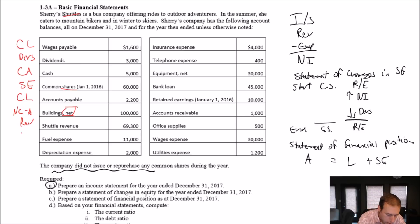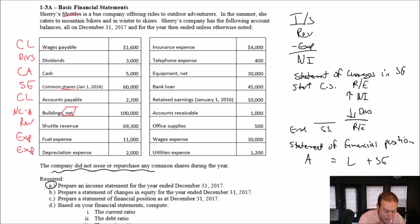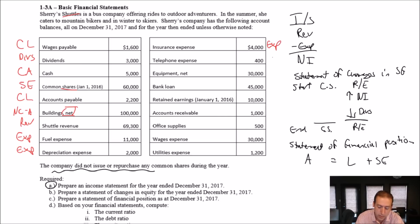Fuel expense — that's an expense, it's a cost of doing business. Depreciation expense — that's an expense. Insurance expense — an expense. Telephone expense — an expense. Equipment net — that's an asset, and it's non-current.